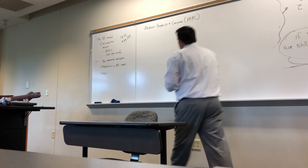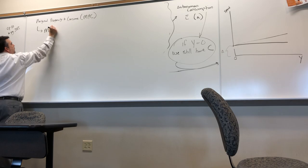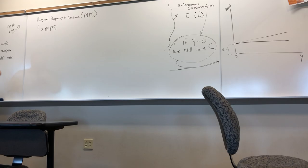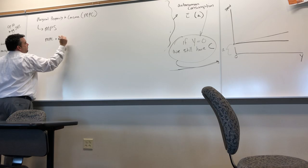There is an opposite of MPC: MPS — the marginal propensity to save. This is effectively what percent of your income you save, or as income changes, how savings change. We believe that MPC plus MPS should equal one. We already did this in our solo model: if you're spending 80%, that means you're saving 20%. We still believe that to be the case.